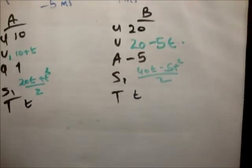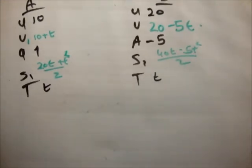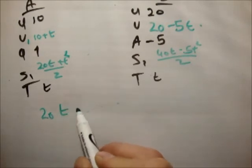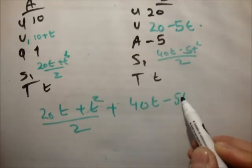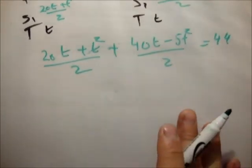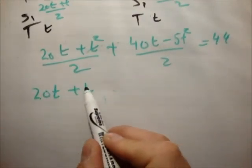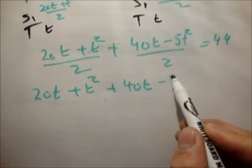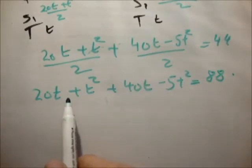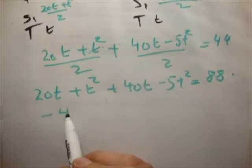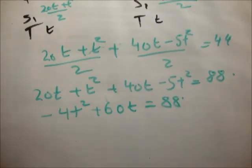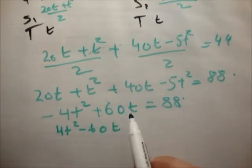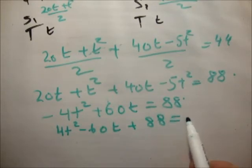So now what we do is we apply our condition that S1 plus S2 equals 44. So you have 20T plus T squared over 2 plus 40T minus 5T squared over 2 equals 44. Multiply across by 2. You have 20T plus T squared plus 40T minus 5T squared equals 88. So that's minus 4T squared plus 60T equals 88. And you always want to rearrange this so that you have 4T squared minus 60T plus 88 equals 0.